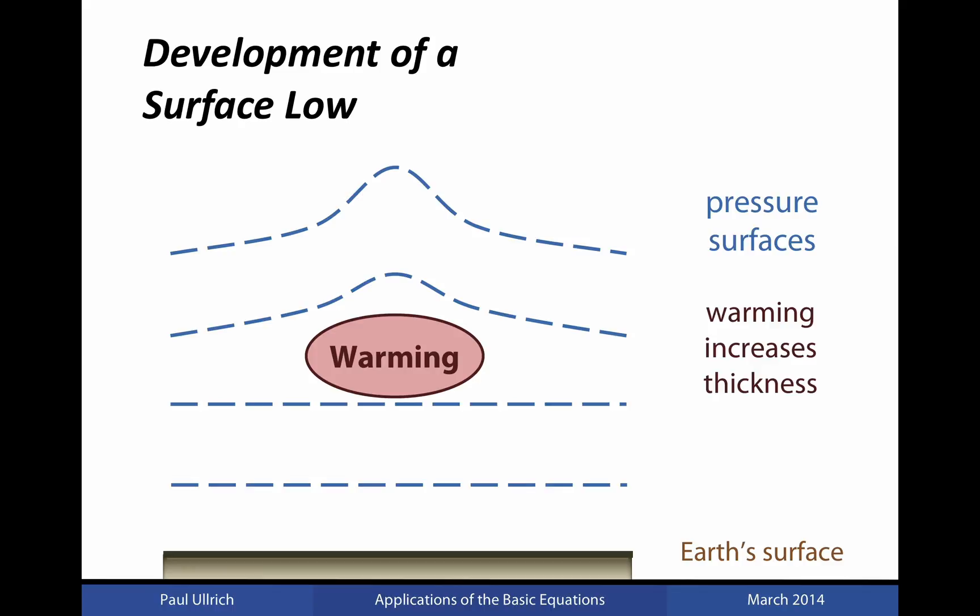Note that at this point, nothing has occurred to the geopotential surfaces below the point where warming occurred. However, once these surfaces have been pushed up, we now have a gradient in the geopotential field. This gradient in the geopotential then causes the velocity to be induced above the point of warming, and leads to divergence of mass in the atmospheric column.